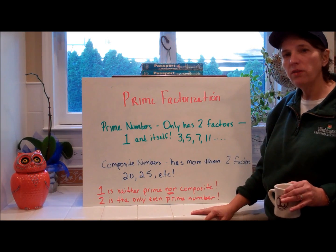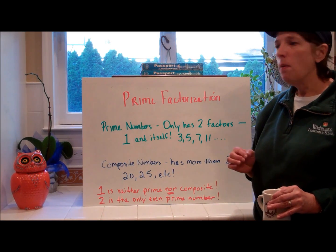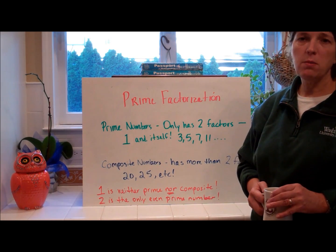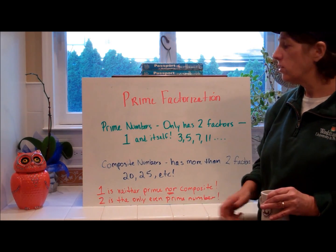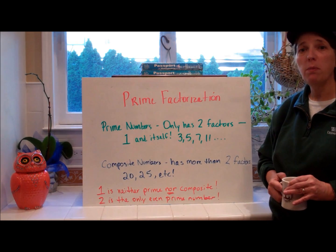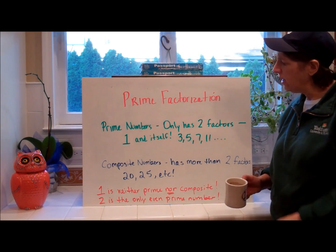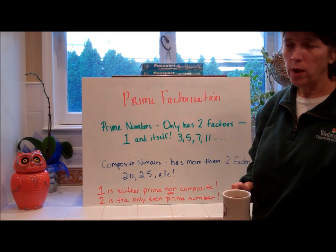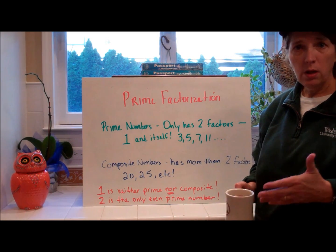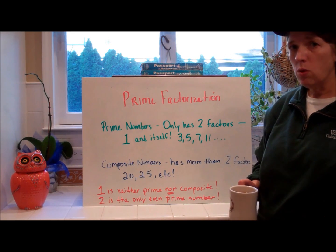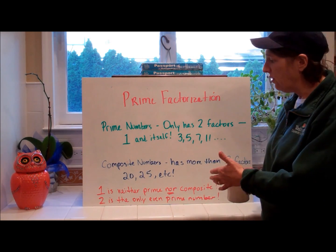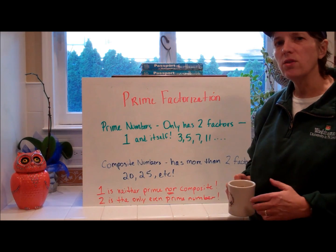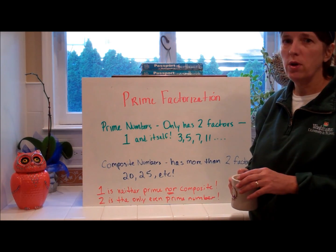Then you have composite numbers. Composite numbers always have more than two factors. You need to know how to spell both of these. An example is twenty or twenty-five. The factors of twenty include one times twenty, two times ten, and four times five. For twenty-five: one and twenty-five, and five and five. Those are all factors, so there are more than two for those numbers.